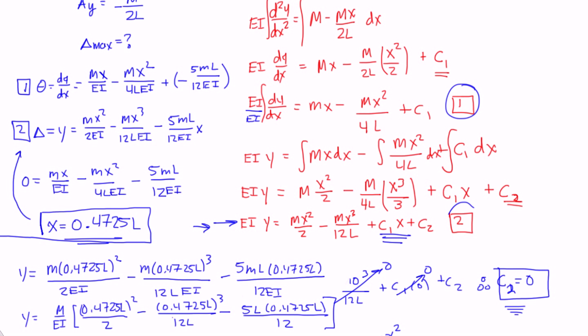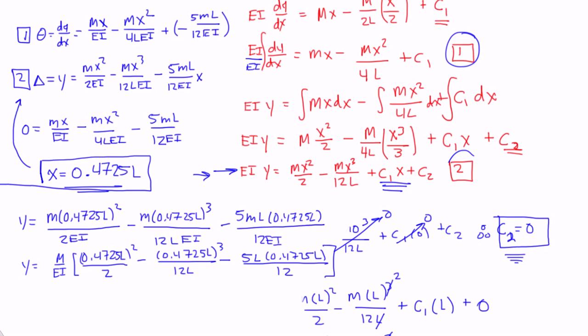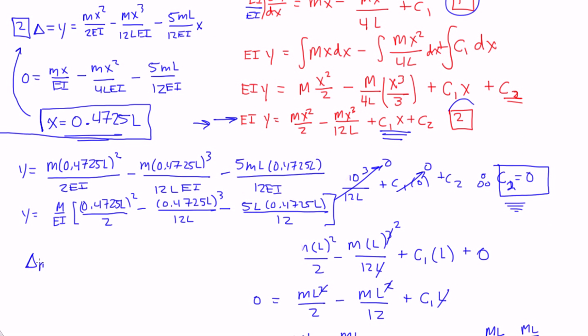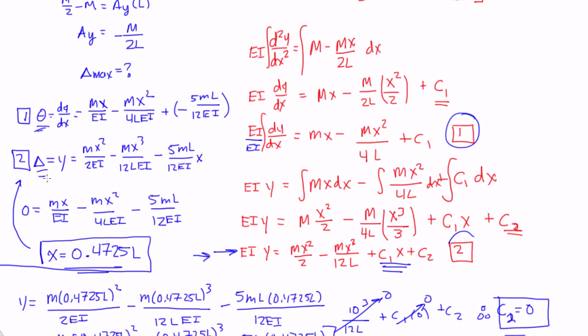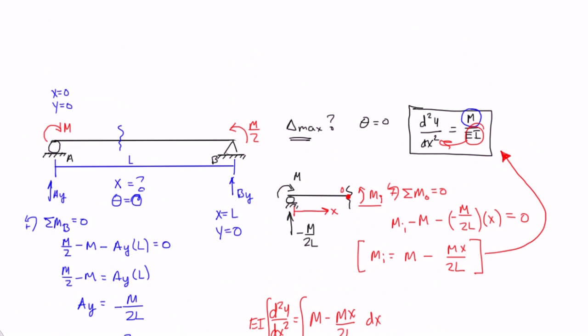So if you solved all this out, eventually you'd get your delta max. And your delta max, or your y, should be about negative 0.094mL squared over EI. All right, so that's an application we used of the two double integration method formulas, the slope and our deflection, to figure out where our maximum deflection would occur on this diagram. All right, hopefully that helped.